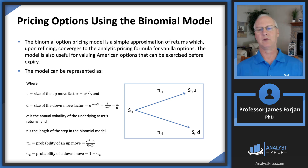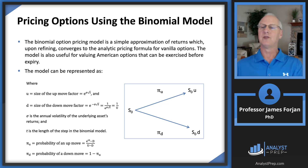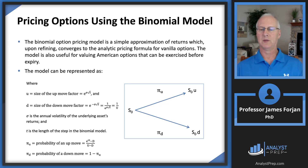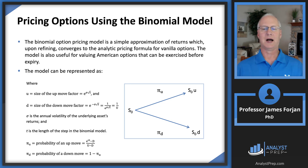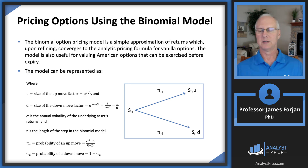What we're going to do is use assumptions about volatility so we can actually predict what that price is going to be. The stock price today — let's say 100 — times an up factor U gives the up price, and times a down factor D gives the down price. Those are weighted by probabilities: pi-U and pi-D, the probability of an up move and the probability of a down move. That going up or down amount depends on time and volatility.